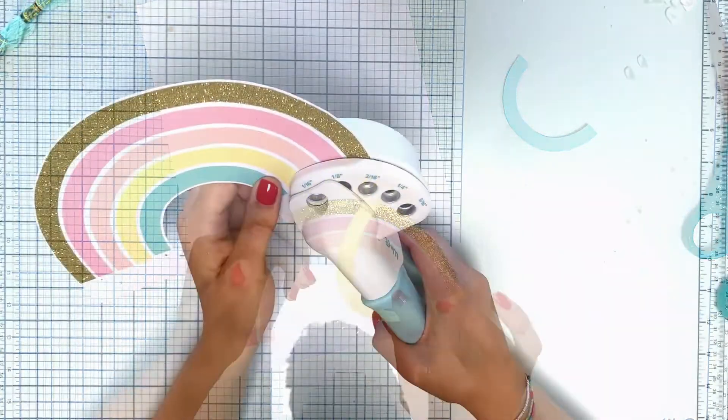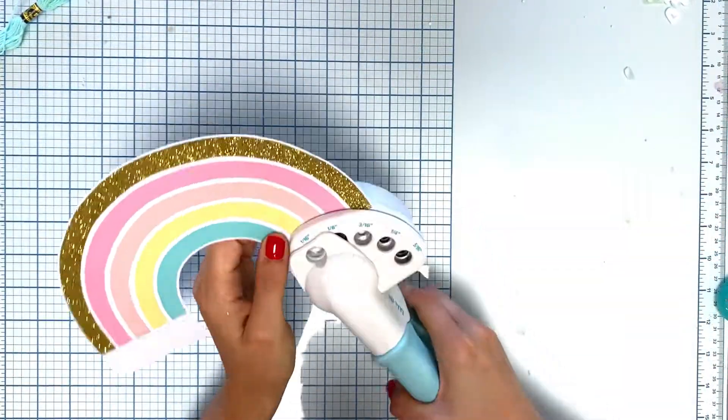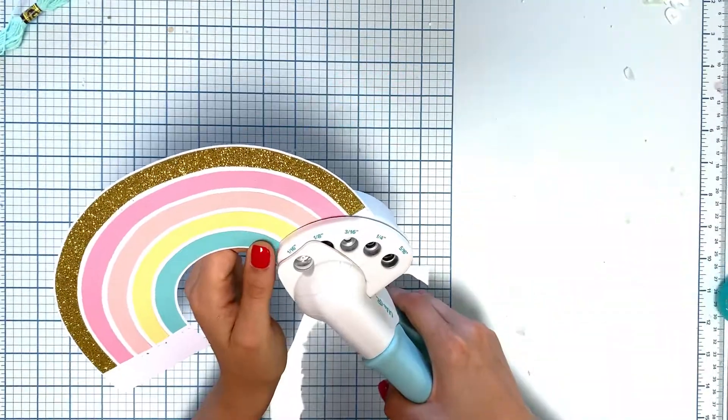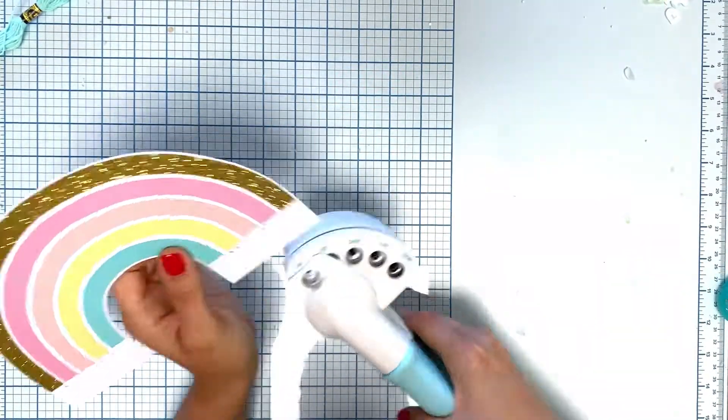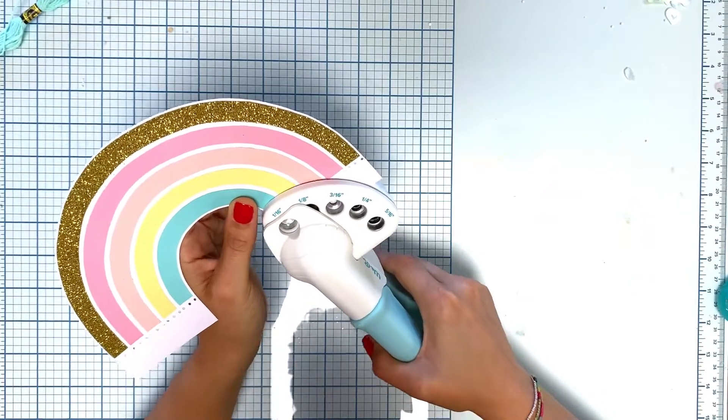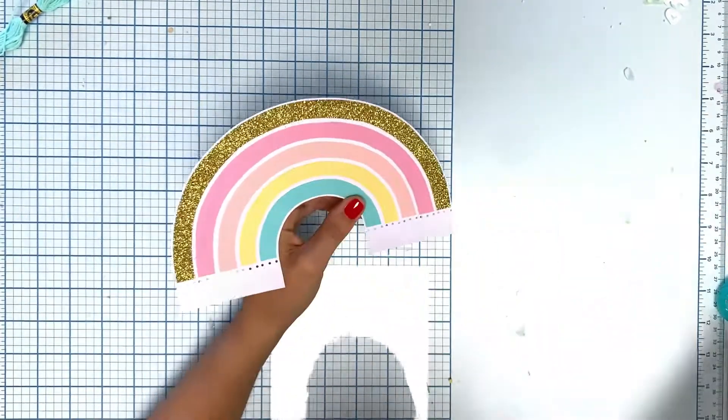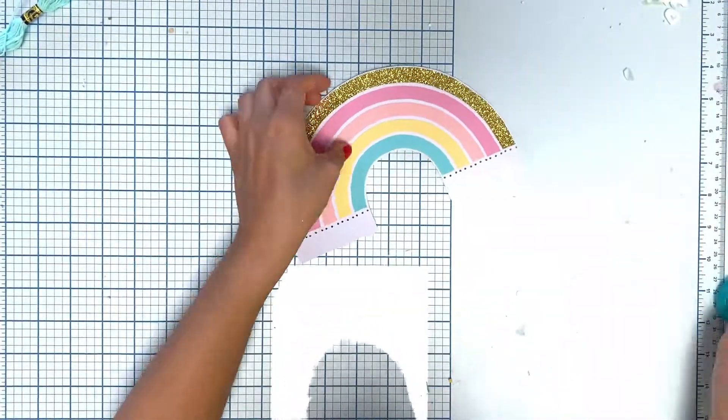When I had everything on my paper, I cut it out. Then I traced with my pencil little dots on where I want my holes to go.